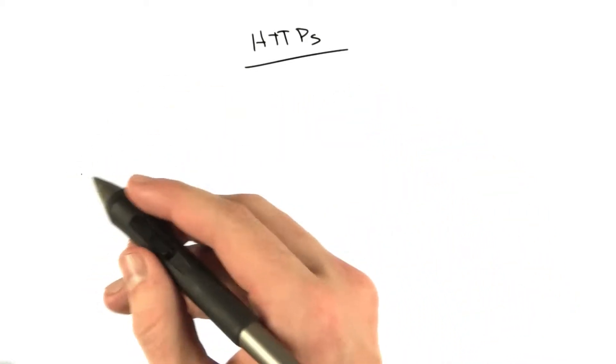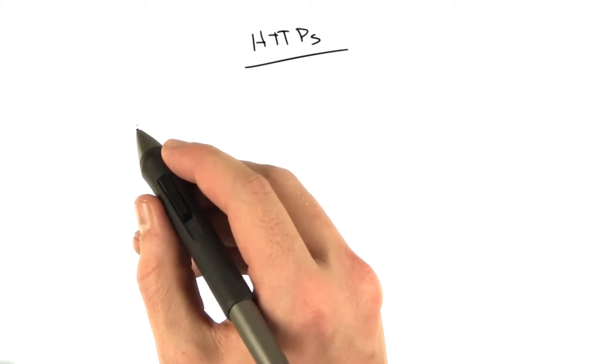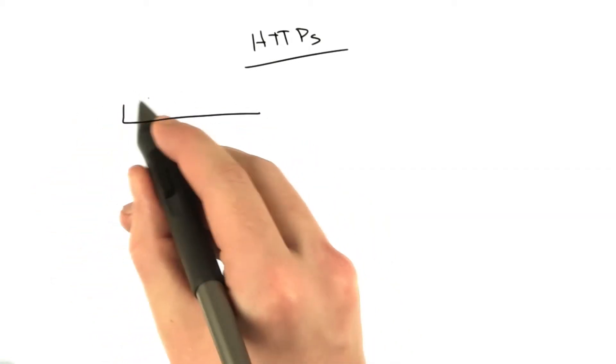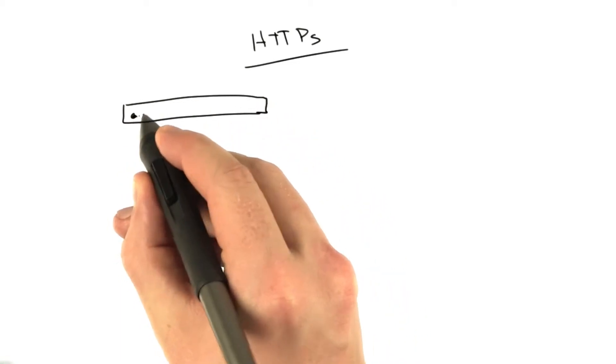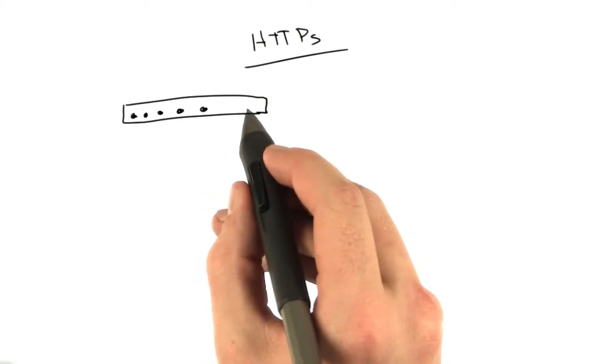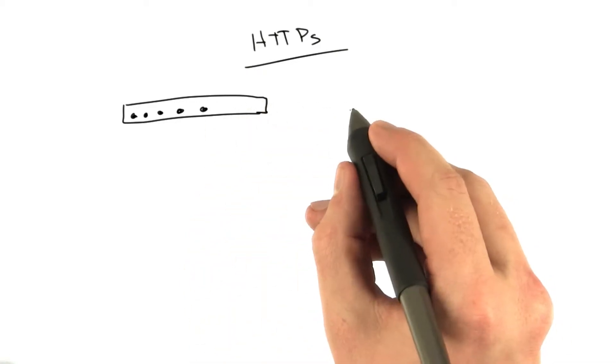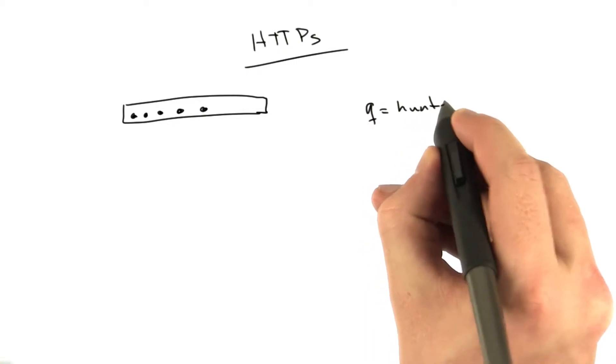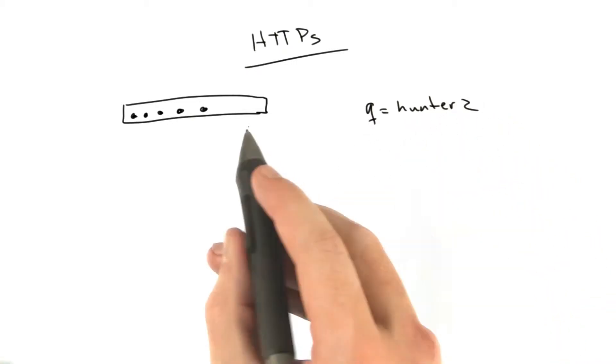We still have this issue that if you type in a password, remember when we did the forms, I showed you that you could type in a password in a password text box, and it looks like little circles or asterisks. But even when you submit this in the URL you could still see. Remember we saw q equals hunter2 when we were playing around with that.